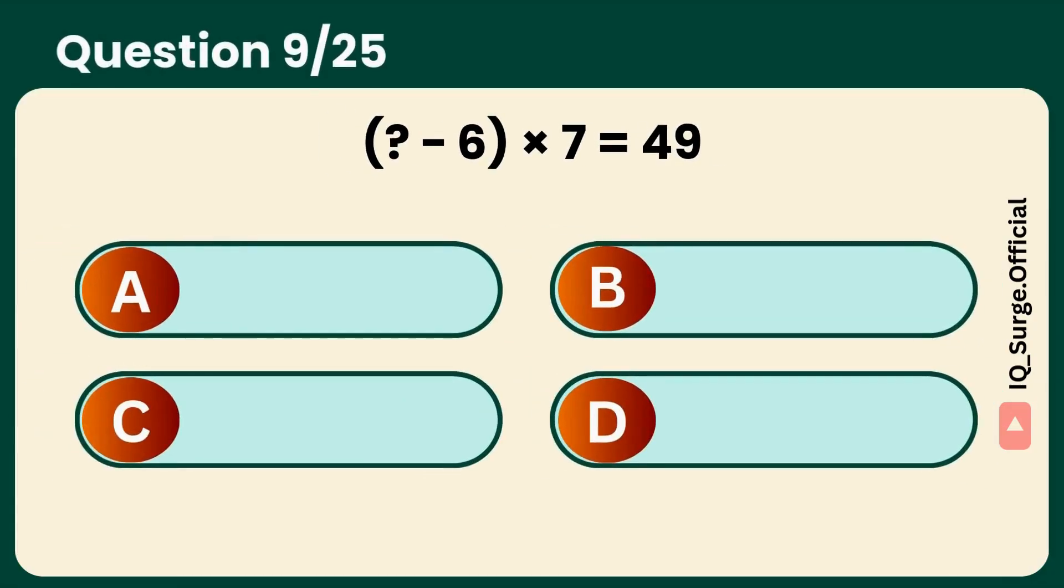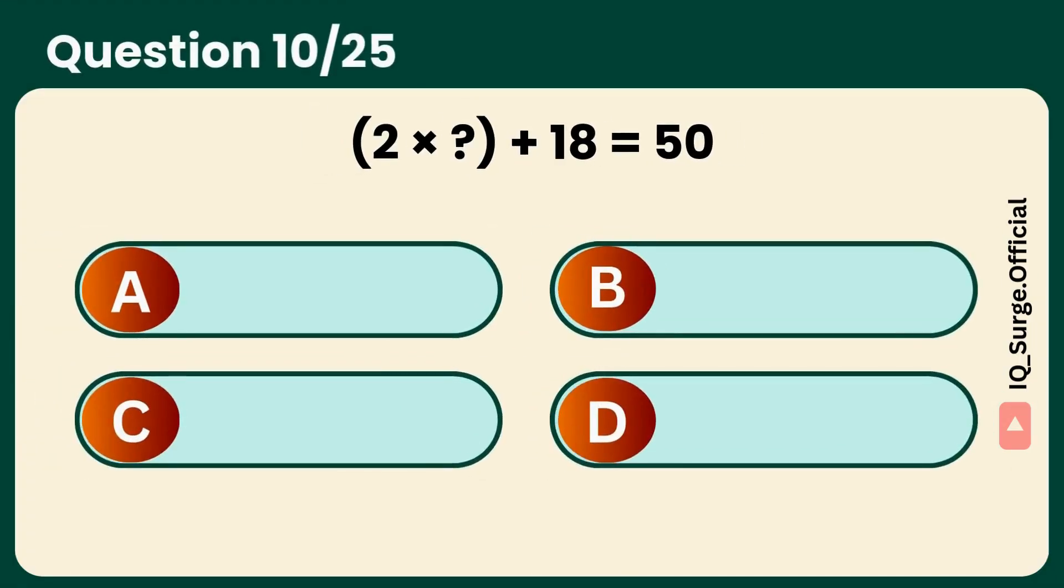Subtraction before multiplication. Don't miss it. Hang on. The number is thirteen. Final one. Can you finish strong? Perfect. The answer is sixteen.